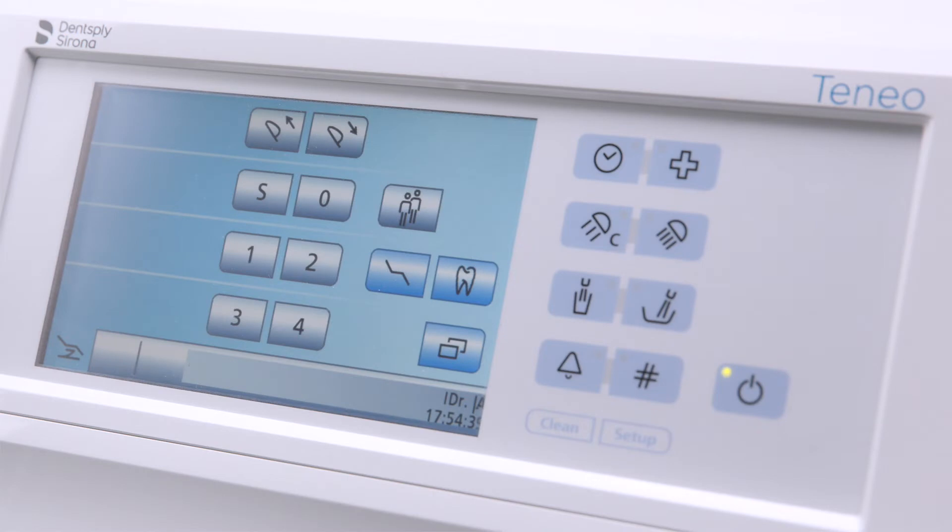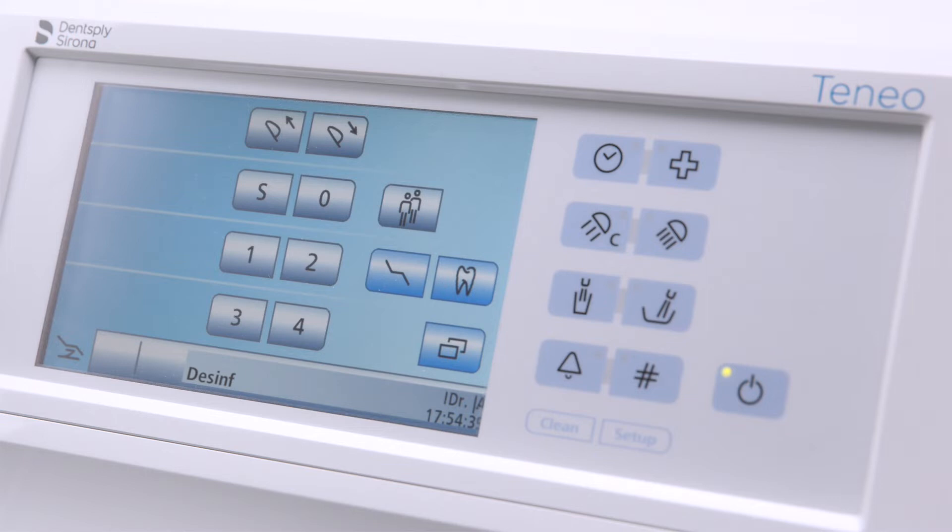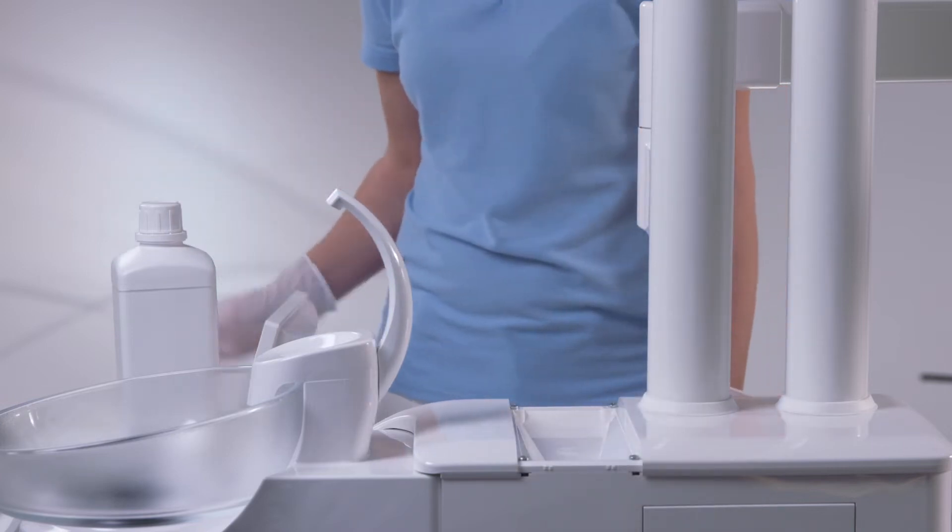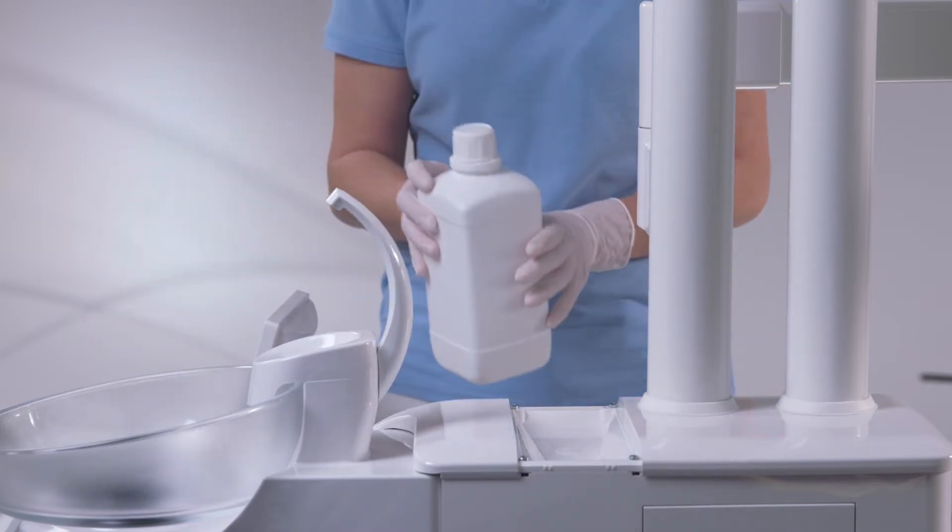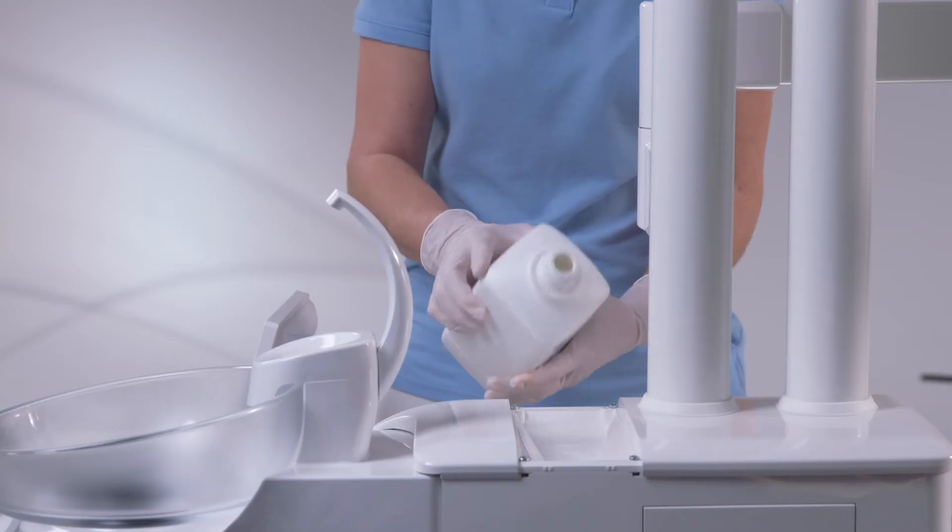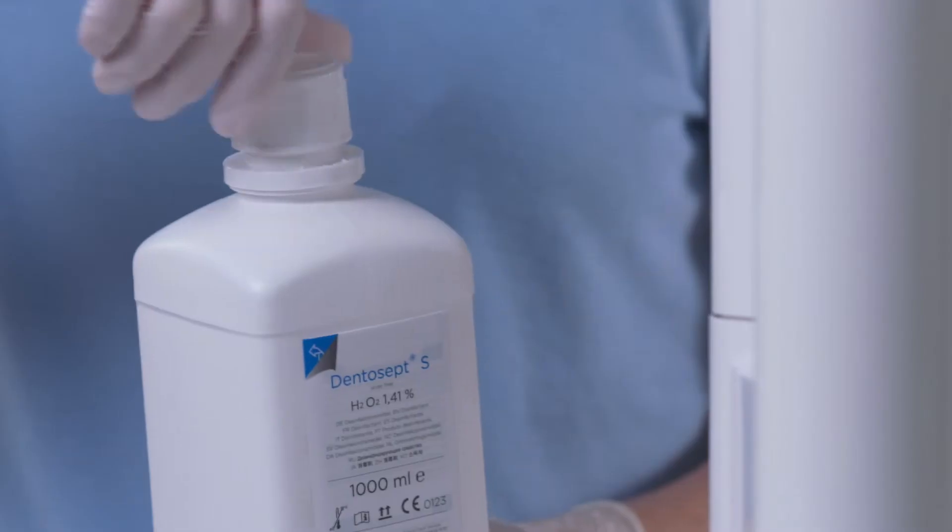If the level of disinfectant for the water lines is low, DES-INF is shown in the status line of the EasyTouch. Open the cover of the disinfectant tank and fill with Dentosept-S. The disinfectant tank has a capacity of approximately 1.3 liters. It is full when the middle of the filling tunnel filter is visible.